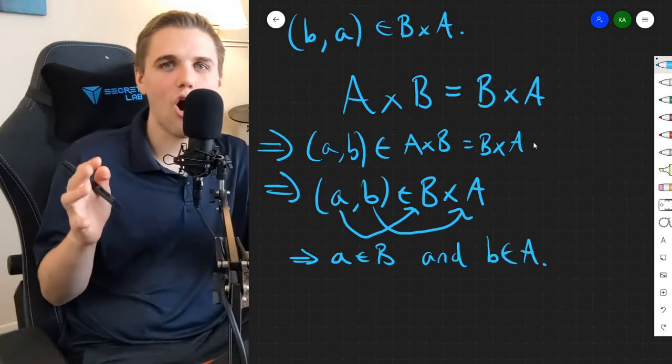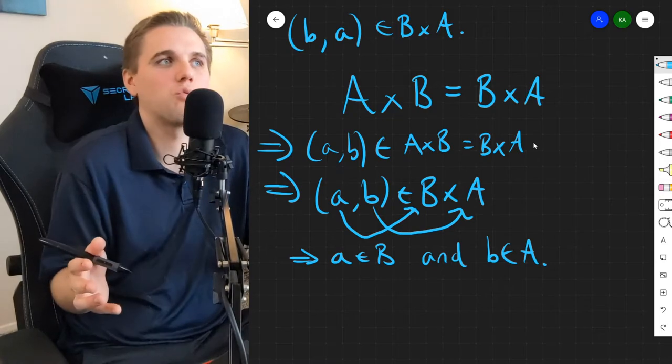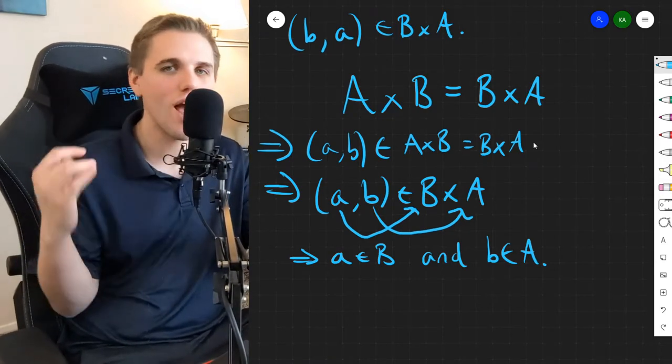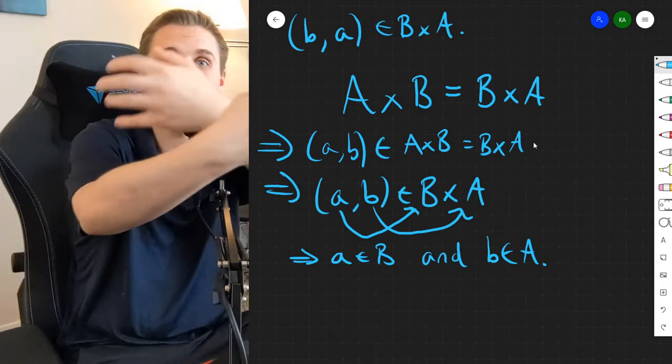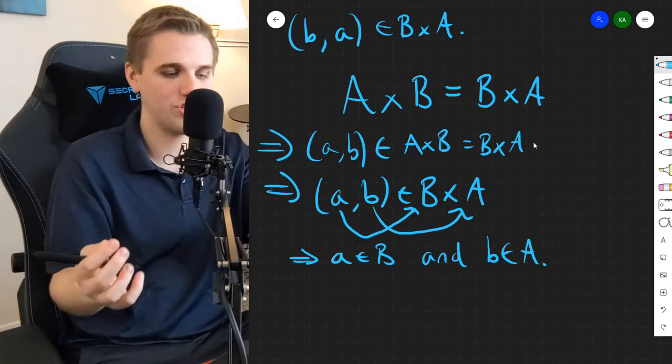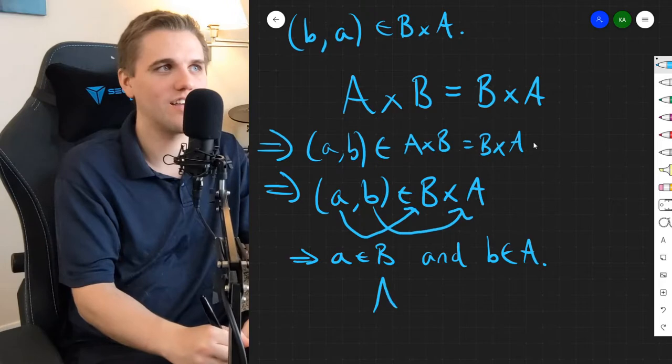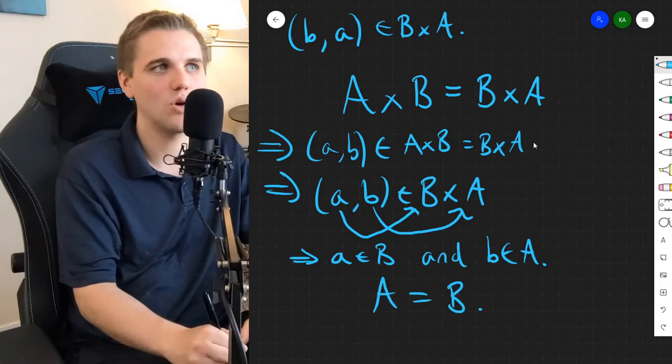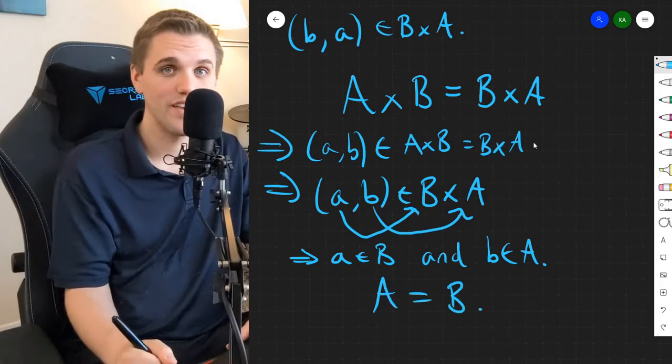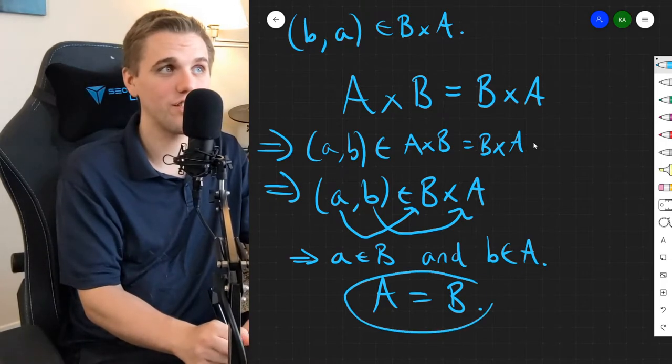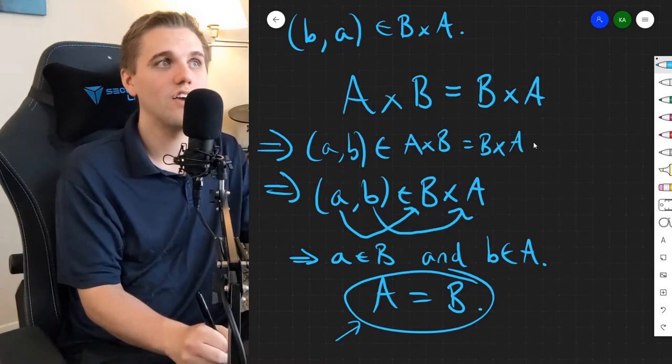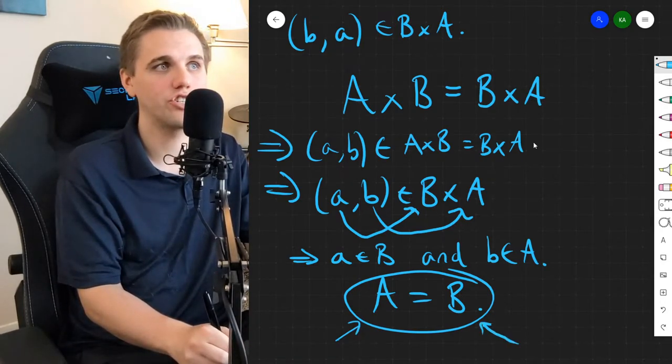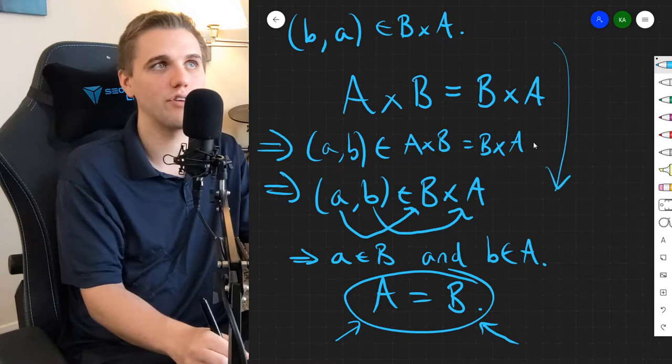But a and b were arbitrary. I just picked a random element from A and a random element from B and then I showed that those two elements are in each other's sets, which is another way of saying that the set A equals the set B. And so that is the conclusion here that these two sets are in fact the same, because if you take any one element from A, you can show that that element is in B through this line of reasoning.